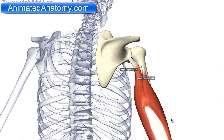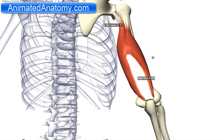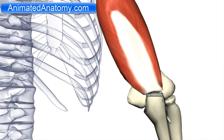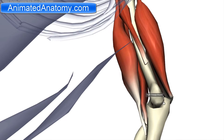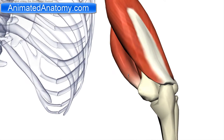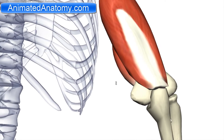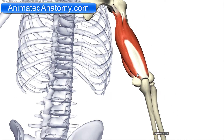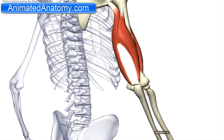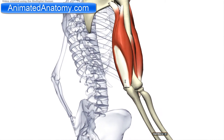The insertion of this muscle is the olecranon process of the ulna — this process here is the olecranon process. The function of this muscle is to extend the forearm and to perform adduction of the shoulder.